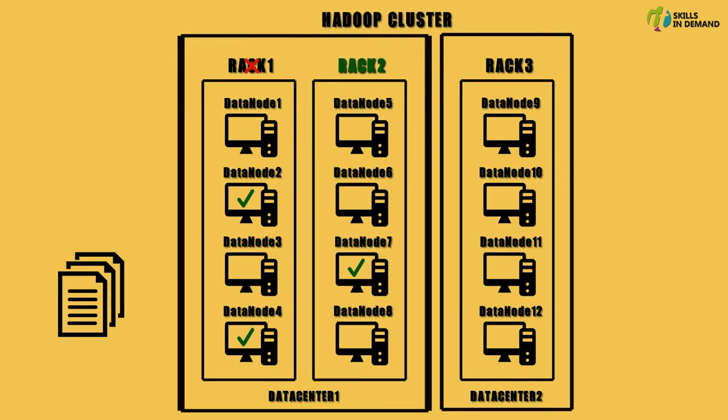The MapReduce jobs can also benefit from rack awareness. By knowing where the data is located that is required by the map task, it can run the map task on that particular machine itself, thereby saving a lot of bandwidth and time. This is referred to as a data local task.